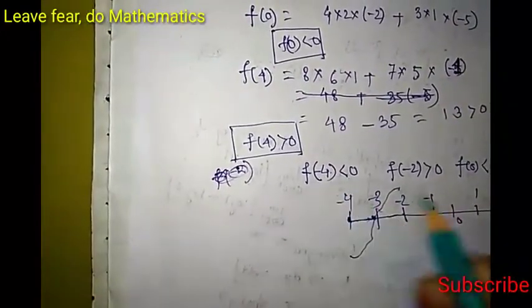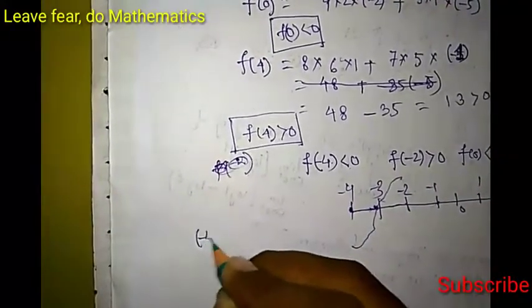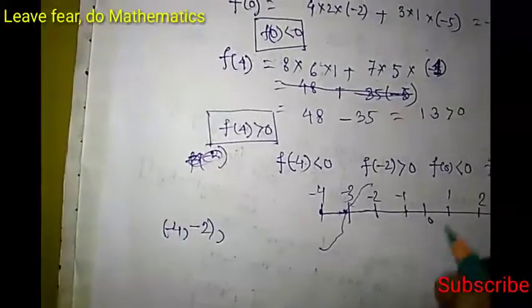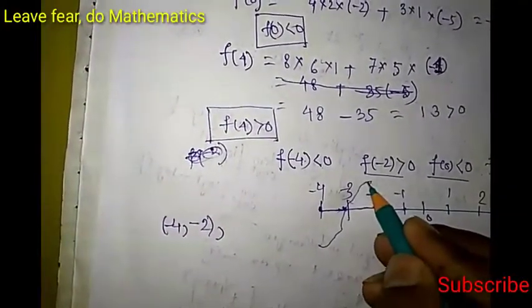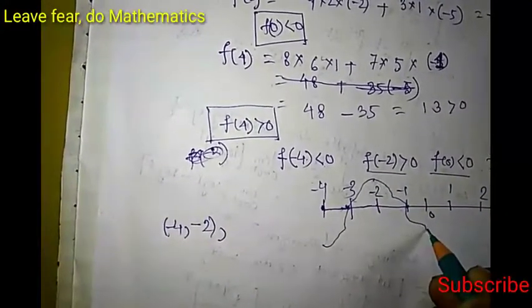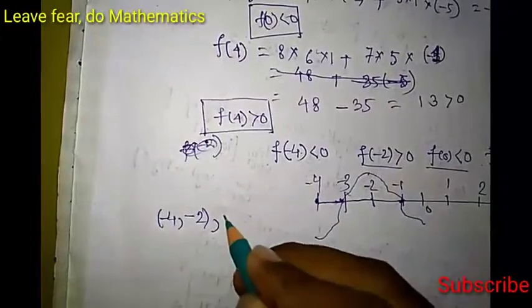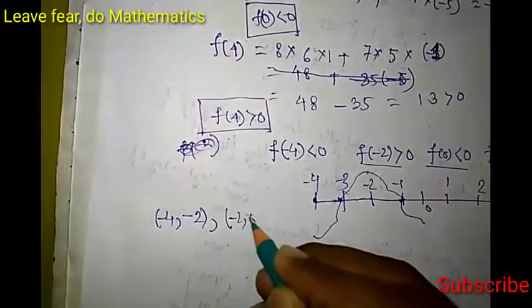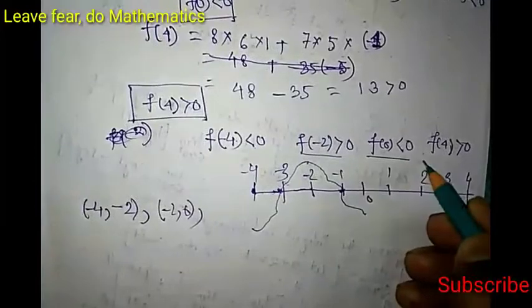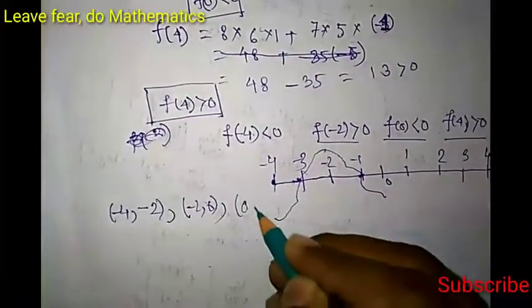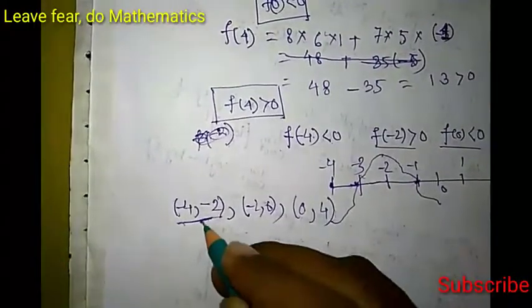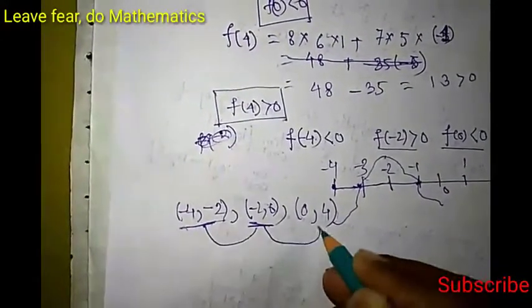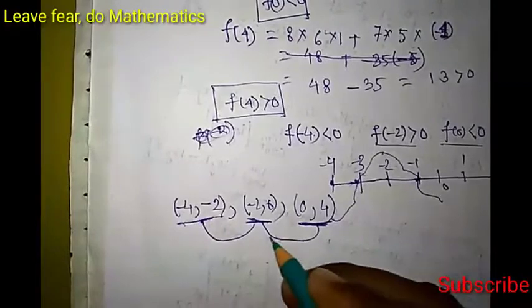Since f(-4) < 0 and f(-2) > 0, one root lies between -4 and -2. Since f(-2) > 0 and f(0) < 0, there is another root between -2 and 0. Since f(0) < 0 and f(4) > 0, there is a third root between 0 and 4. So the function has three real and distinct roots, lying in the intervals (-4, -2), (-2, 0), and (0, 4).